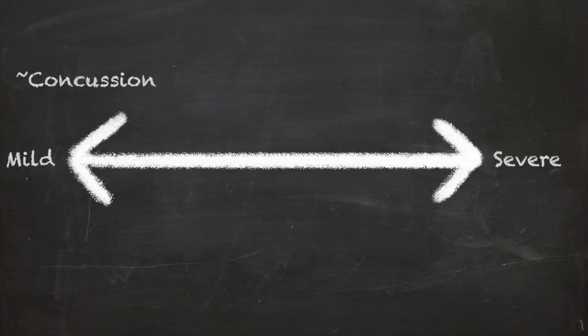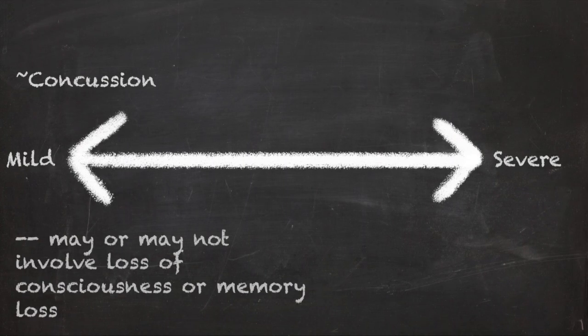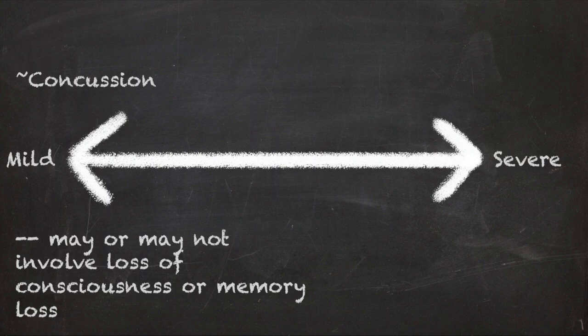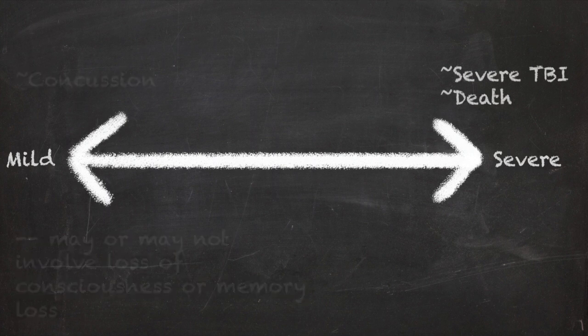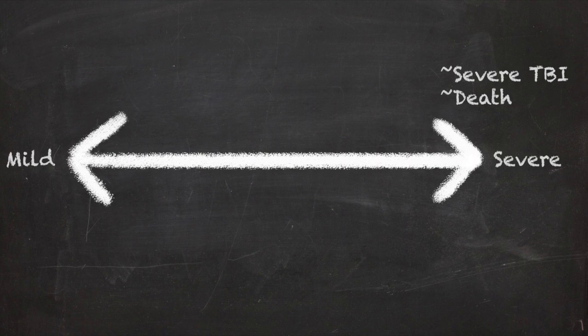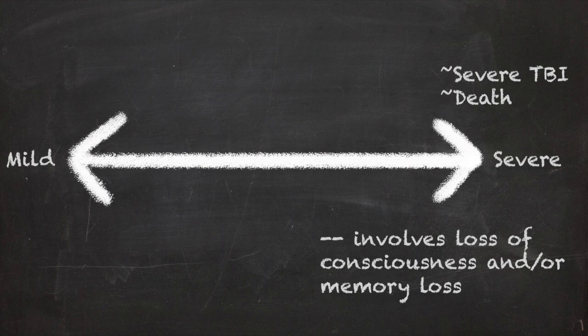A TBI can be as mild as a concussion, which may or may not involve loss of consciousness or memory loss. A TBI can also be very severe, leading to major lifelong problems or even death. Severe TBIs involve loss of consciousness and memory loss.